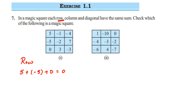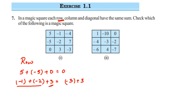The next row is (−1) + (−2) + 3. The first two numbers have the same sign, so we add them: 1 + 2 = 3, and the sign remains negative, giving −3. Then −3 + 3: we have the same number with opposite signs, so they cancel out and the sum is 0.